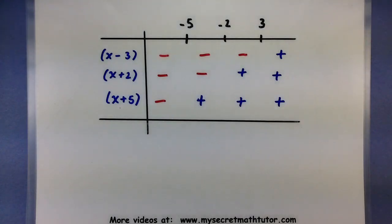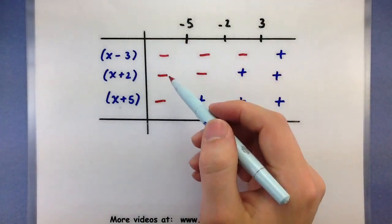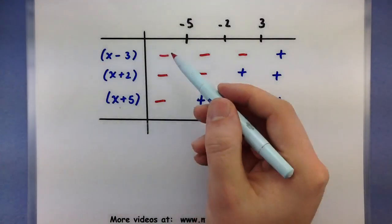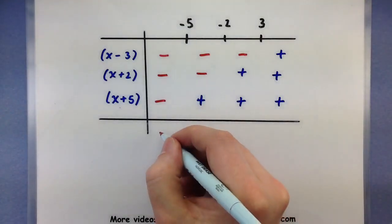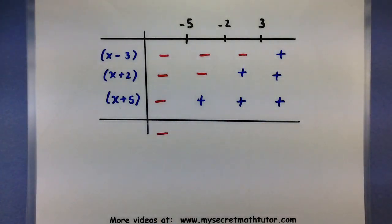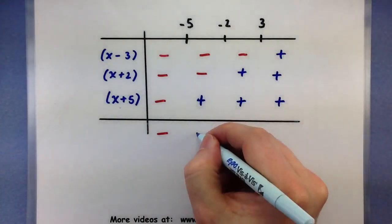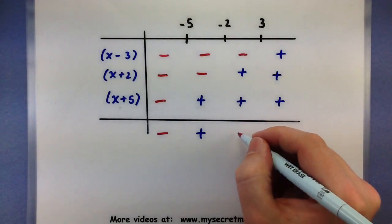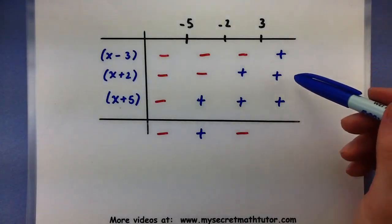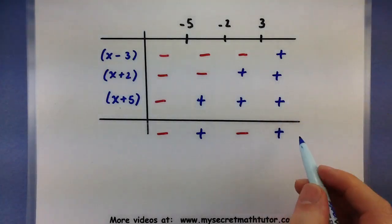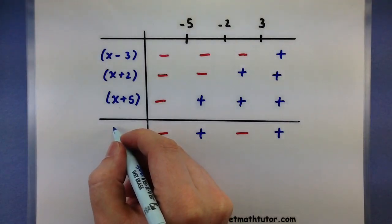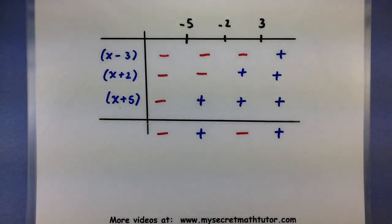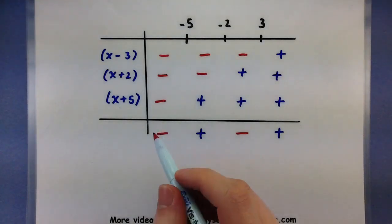Since each factor is being multiplied in the entire polynomial, I want to see what these signs will be multiplied together. For the first interval: negative times negative times negative — negative times negative is positive, times another negative gives negative. On the next interval: two negatives multiplied then by a positive — negative times negative is positive, times positive is positive. Then: negative times positive times positive gives negative. And the last one: positive times positive times positive — positive. This last row corresponds to the entire polynomial, and we're looking for when it is less than zero.